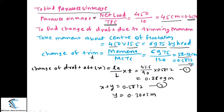Now that we know the trim, we find the change of draft at the forward and at the aft. The change of draft at the aft, X, is given by the formula: LA divided by L, multiplied by T. LA is the distance of the center of floatation from the aft, L is the total length of the ship, and T is the trim we just calculated. Substituting all values gives X equal to 0.2809 meters.